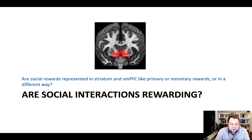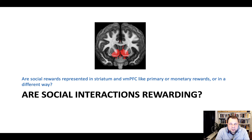So let's answer the question whether social interactions can be rewarding. We'll be looking into a number of studies that have basically shown this correlation — the neural correlates within the reward system while participants are performing some kind of social choice task. This gives us sort of indirect evidence, which is based on a reverse inference. So we have to be careful here, but the evidence is consistent with the hypothesis that under certain circumstances, social interactions within these kinds of games can be rewarding.